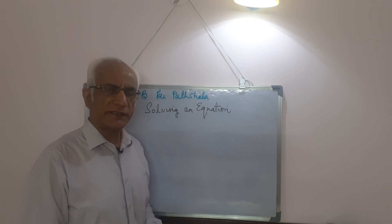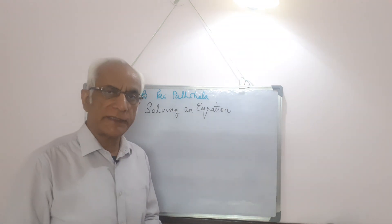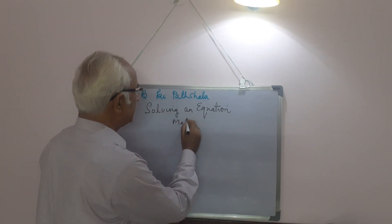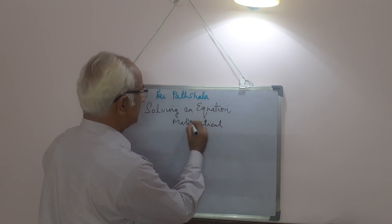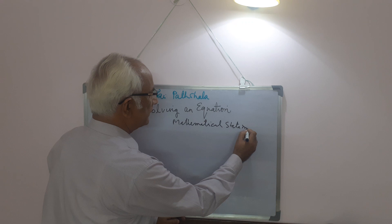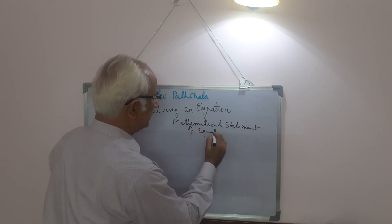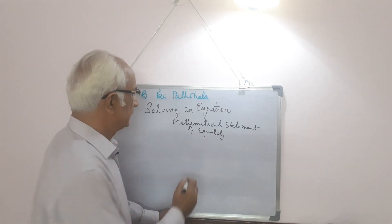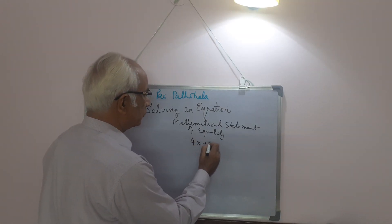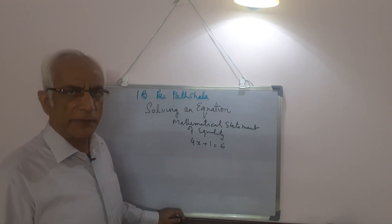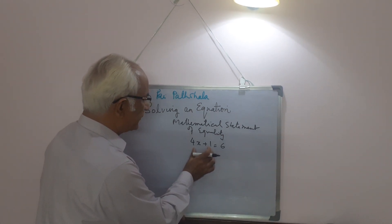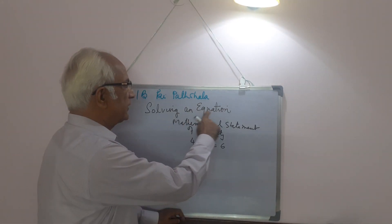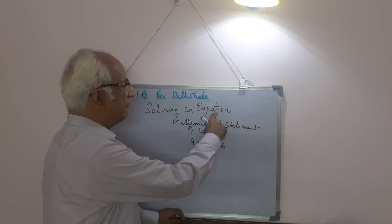First let us understand what an equation is. An equation is basically a mathematical statement of equality. That means it has two sides and the value of both sides is equal. For example, 4x plus 1 is equal to 6. This is a mathematical statement — it has a left side and a right side, and the value of both sides is equal. That is why it is called an equation; the word equation is derived from equality.